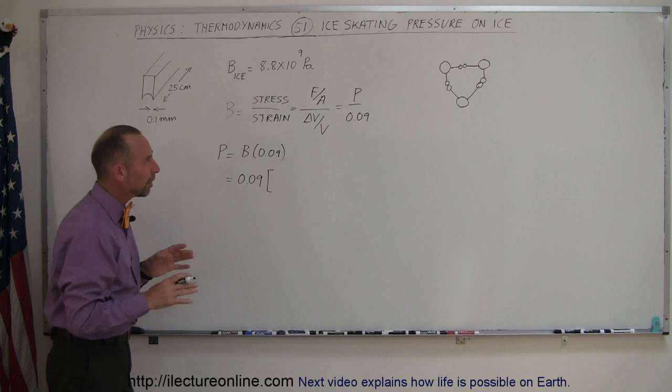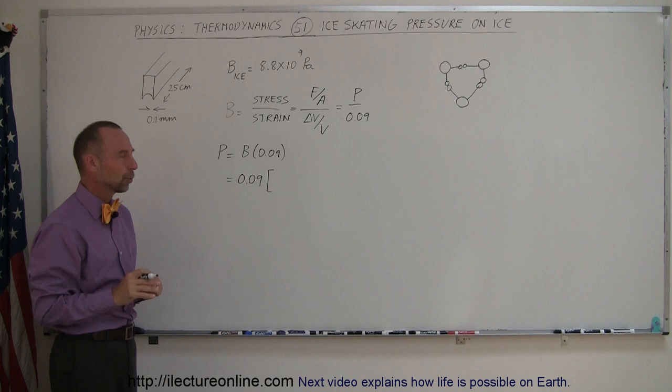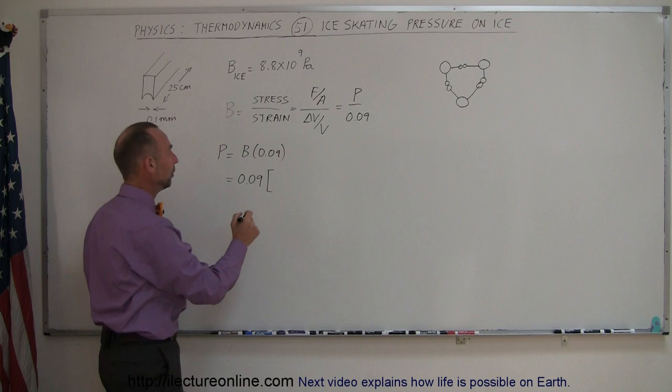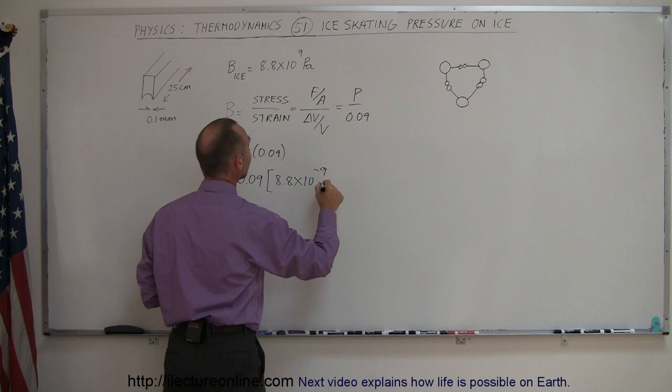This equals 0.09 times, and I've written down the bulk modulus. Notice the bulk modulus changes by temperature—the colder the ice gets, the greater the bulk modulus. We're kind of ignoring that detail for temperatures somewhere between 0 and minus 20 degrees Celsius. That's a pretty good number, so we have 8.8 times 10 to the 9th Pascal, which is Newtons per square meter.